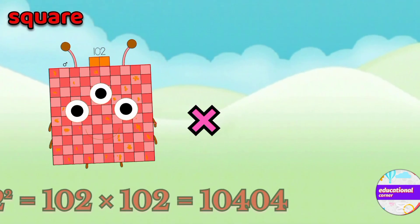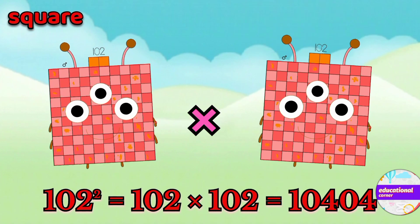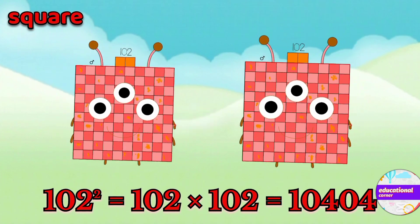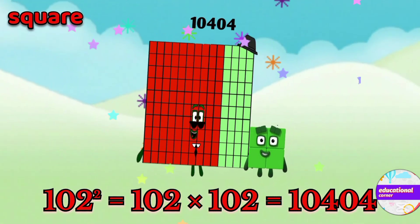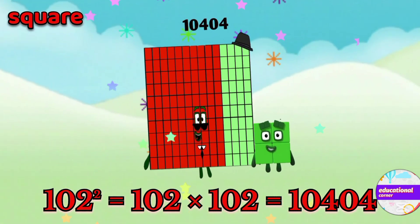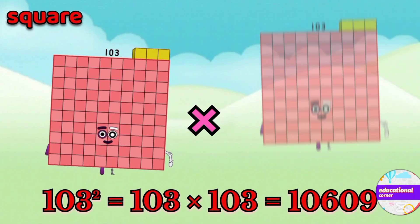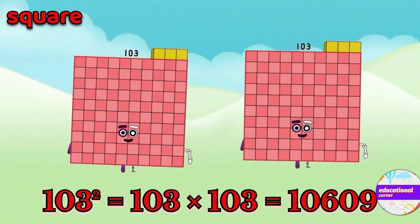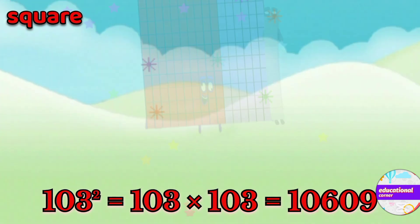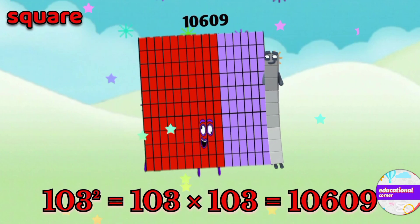102 multiply by 102, so the square of 102 is ten thousand four hundred and four. 103 multiply by 103, so the square of 103 is ten thousand six hundred and nine.